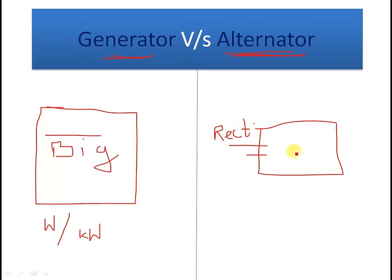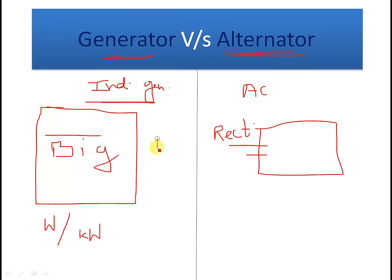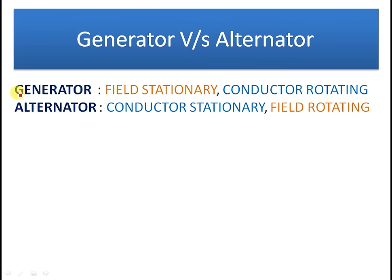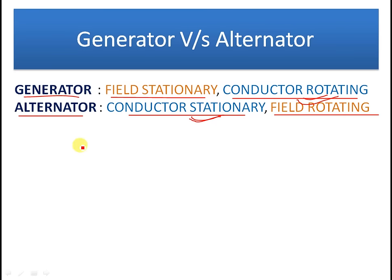So these are the basic differences between generator and alternator. One exception worth noting is the induction generator, which is used in windmills but is not commonly used otherwise. To summarize: a generator can produce DC or AC, but we generally mean a DC machine; an alternator only produces AC. In terms of construction, in a generator the field is stationary and the armature conductor rotates, while in an alternator the conductor is stationary and the field rotates.